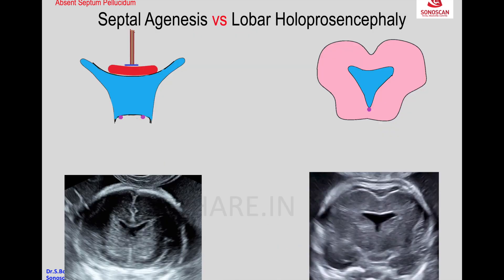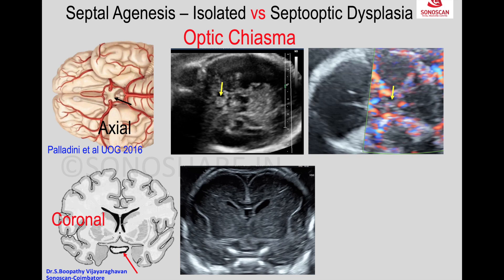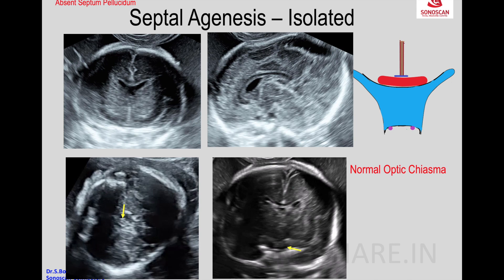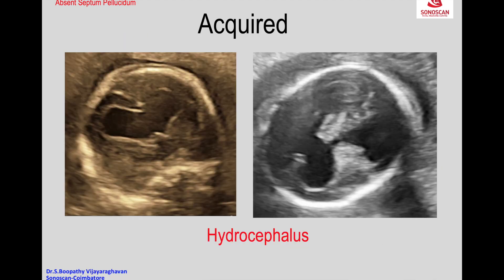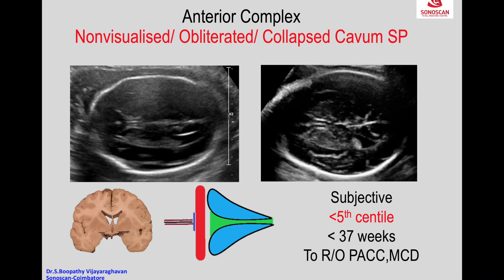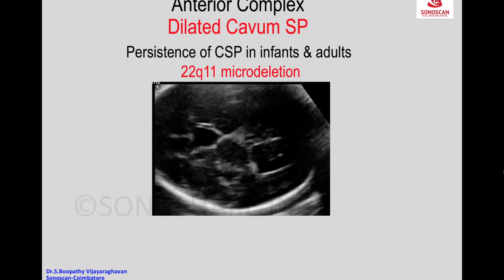We come to the last type of holoprosencephaly, which is the middle interhemispheric variant. These are the features of septal agenesis, so we have to differentiate at anomaly scan time. When you see the optic chiasm in the coronal plane on oral scan — because normal optic chiasm is seen — it is a case of isolated septal agenesis.